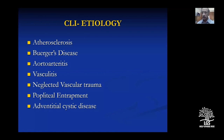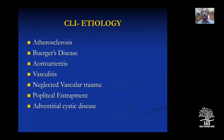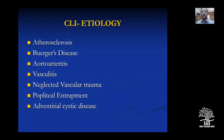The common etiologies have shifted: when I was a student, the most common was Buerger's disease, but now the majority are atherosclerotic patients. Buerger's disease is still present, followed by aortoarteritis, which is an inflammatory arterial disease, then neglected vascular trauma — such as patients undergoing a fracture or knee replacement who develop arterial injury to the popliteal and later present with ischemia. Congenital causes include popliteal entrapment and adventitial cystic disease.